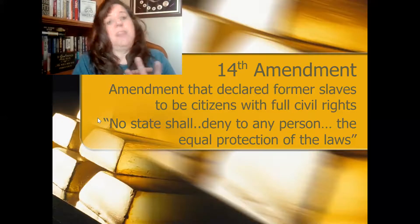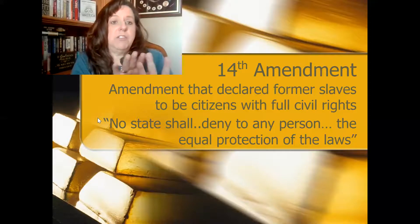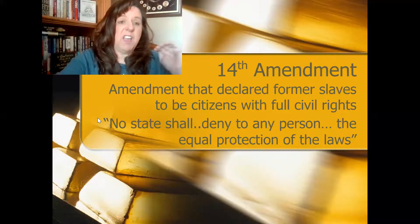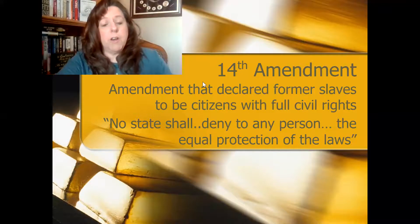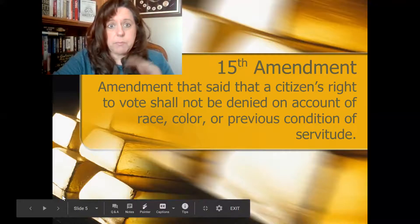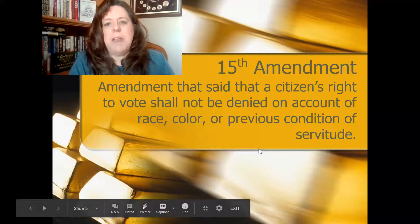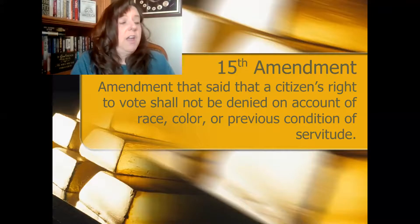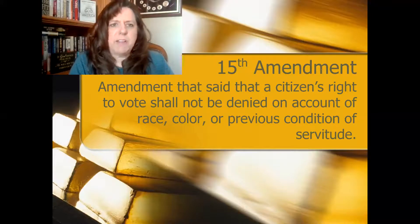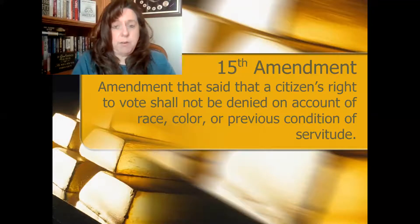There are three amendments that deal with slavery under reconstruction — the 13th, 14th, and 15th — we call those the slavery amendments. The 13th got rid of slavery, the 14th says everyone including former slaves must be treated equally under the law, and the 15th Amendment says you cannot deny anyone the right to vote on account of their race, color, or the fact that they used to be a slave — what we call servitude.